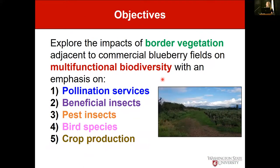With several conflicting messages about border vegetation, we were curious to look at this in western Washington blueberry fields. The objectives of this one-year preliminary study were to look at the impacts of border vegetation on multifunctional biodiversity — how they impact pollination services, populations of beneficial and pest insects, bird species, and elements of crop production.